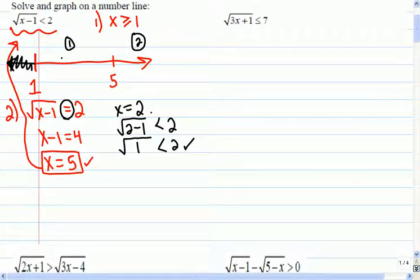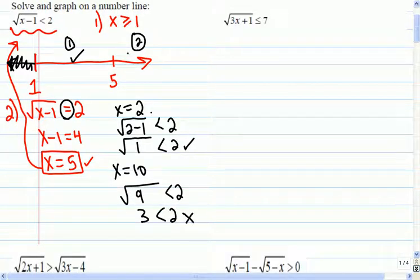Okay, so this works here in region number 1. If we try it another one, like let's say I try x equals to 10. Square root of 9, is that less than 2? It's not. So we can reject that one. That will give us an answer which is between 1 and 5.